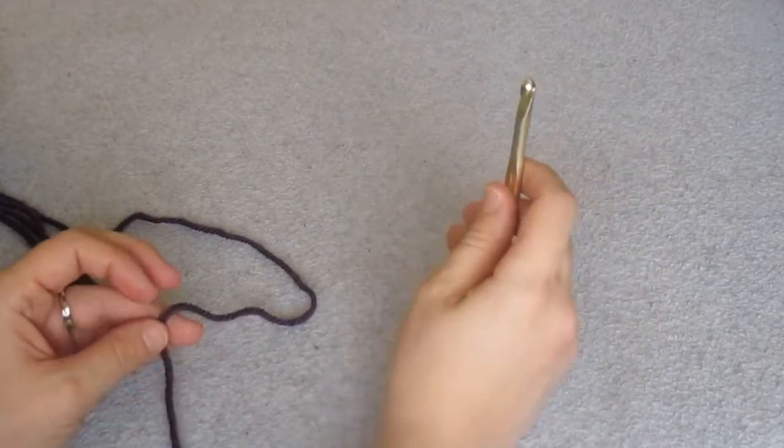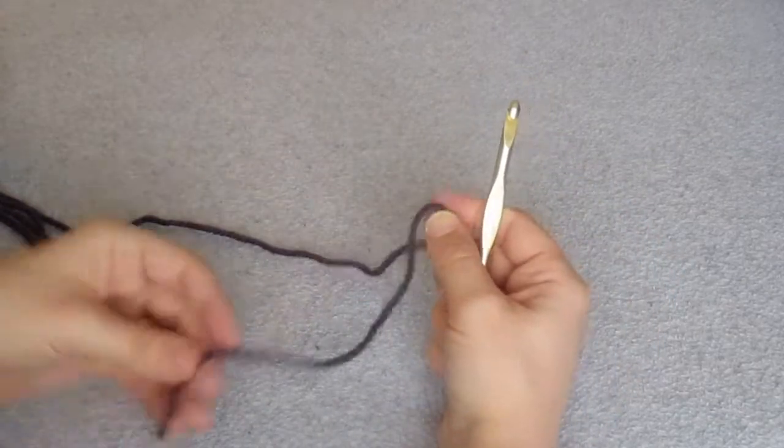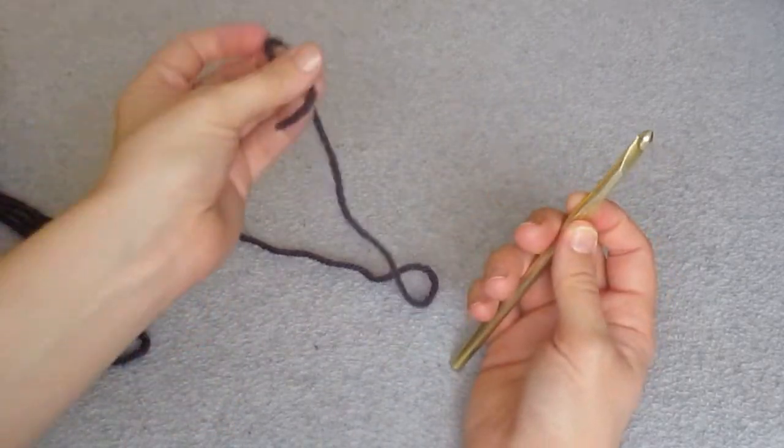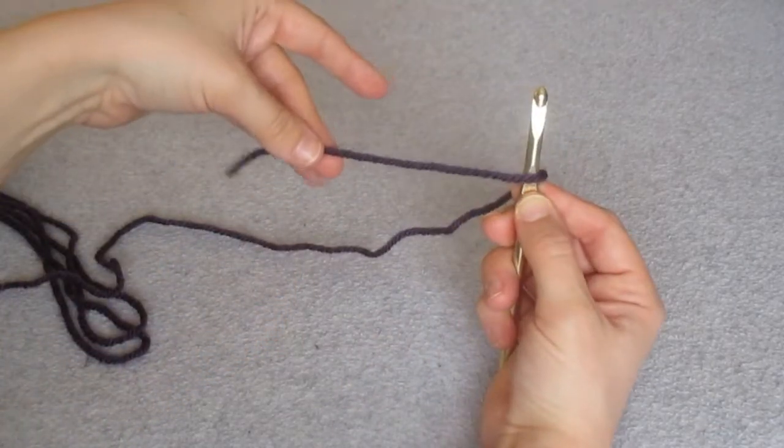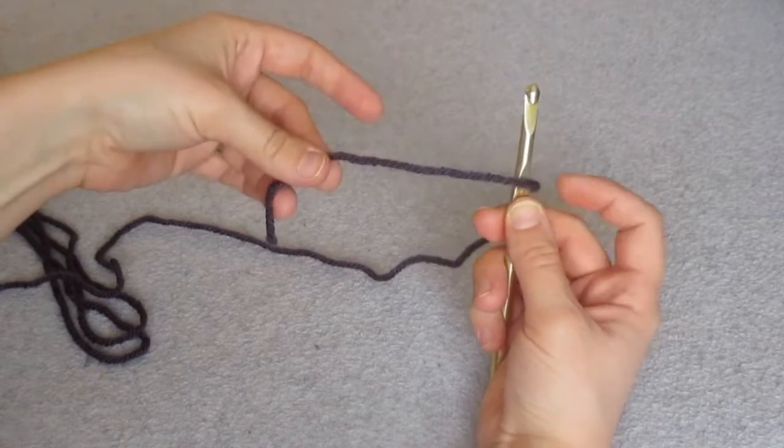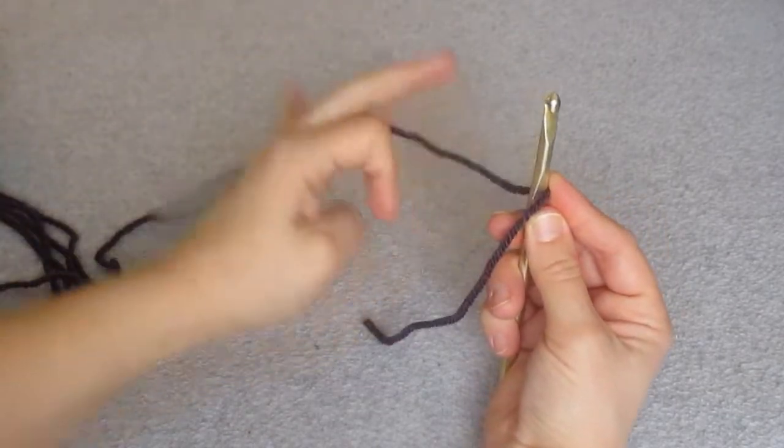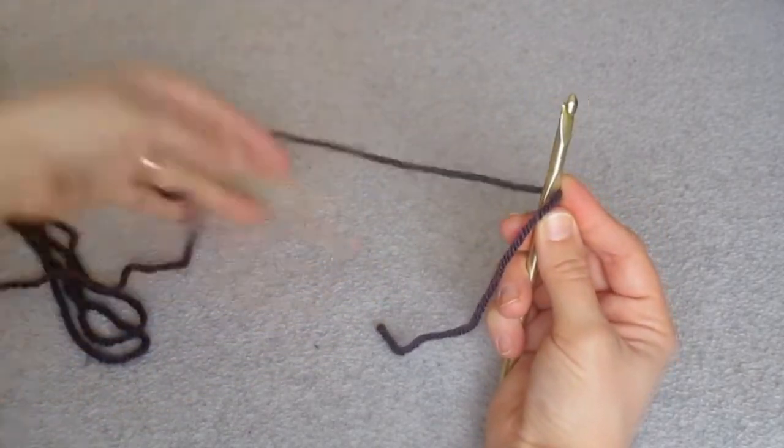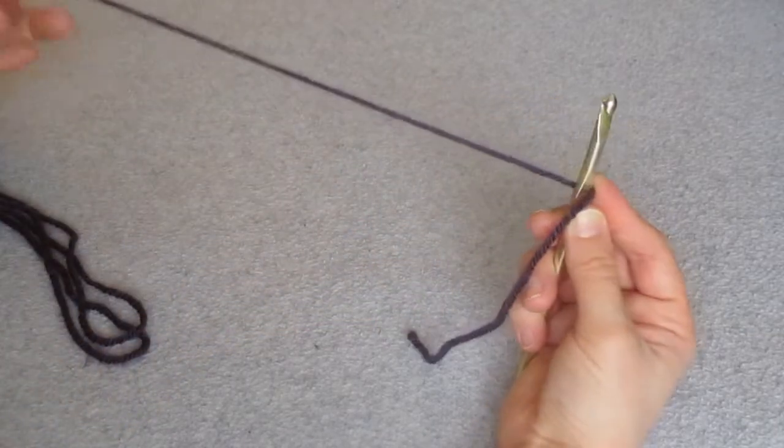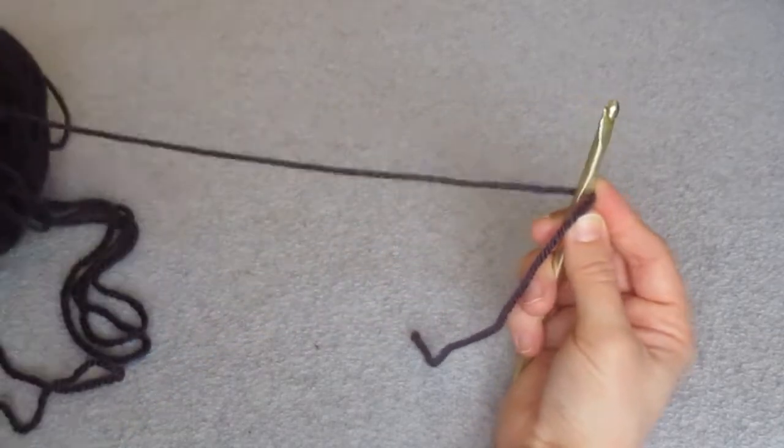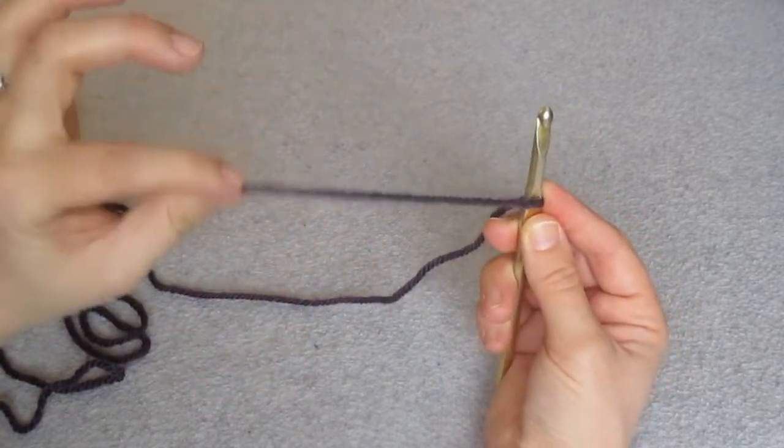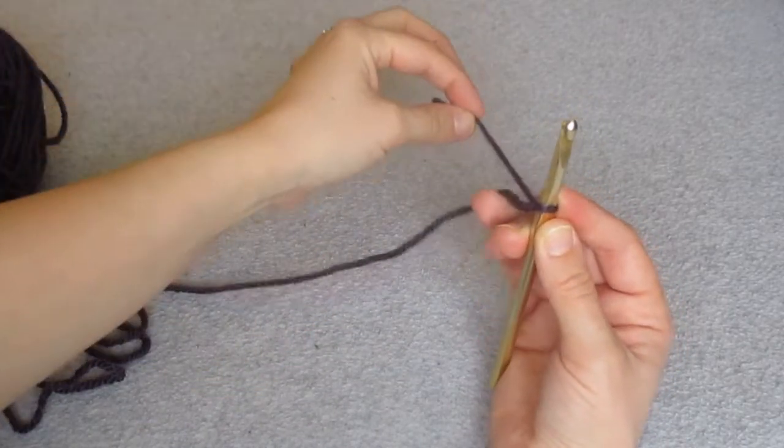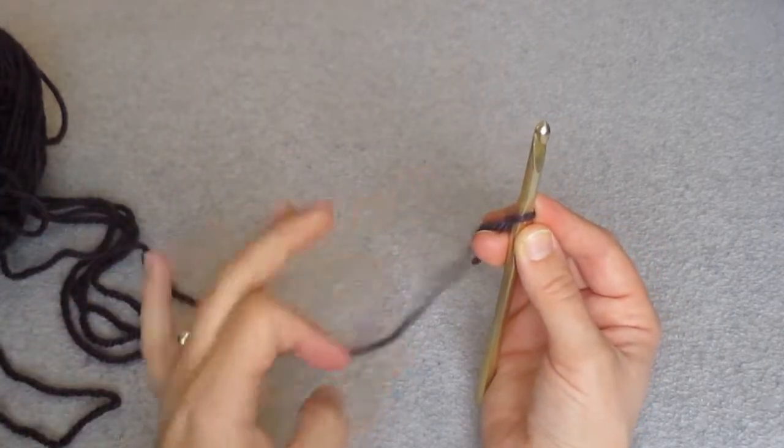Anyway, what we'll do is we'll start with that loop on your hook. What you want to do is take the end of your yarn and wrap it around the hook just like that so that it's right in front. Now you're going to grab the, or you want to see that this yarn in the back leads to the skein. Now you take the yarn that's in front, the very end, and you want to go over the yarn in the back and grab on with your fingers in the back.